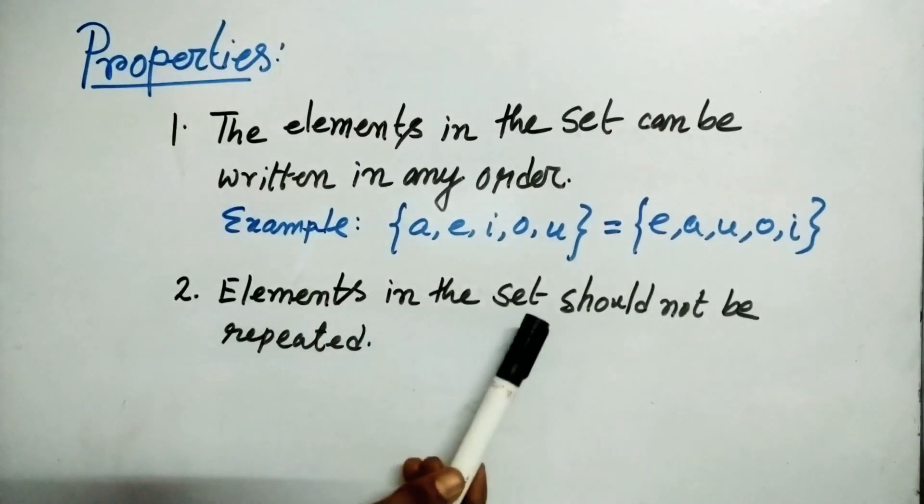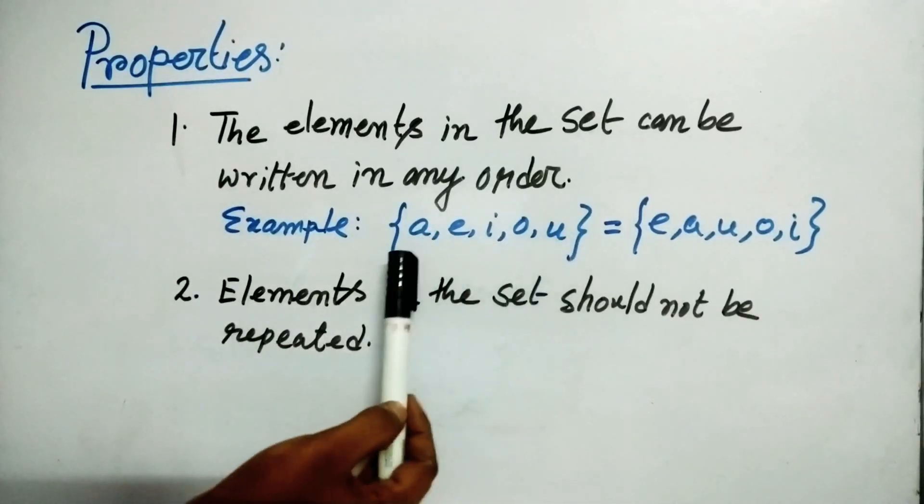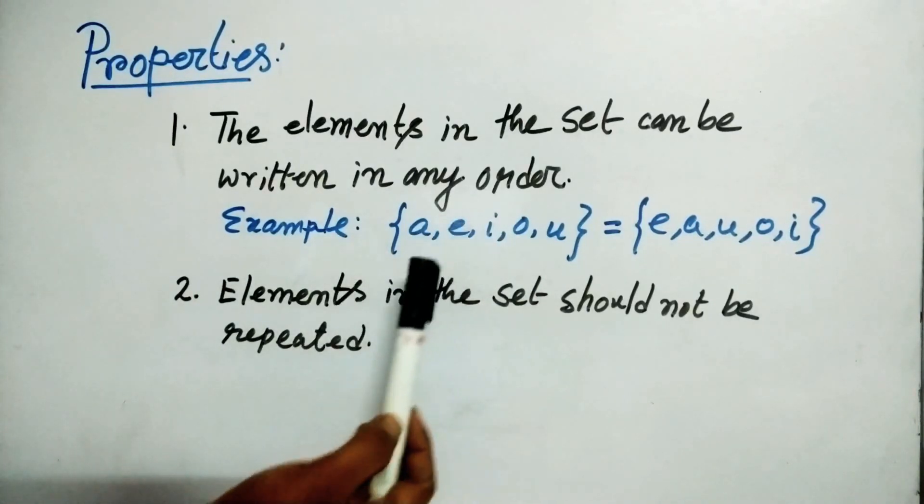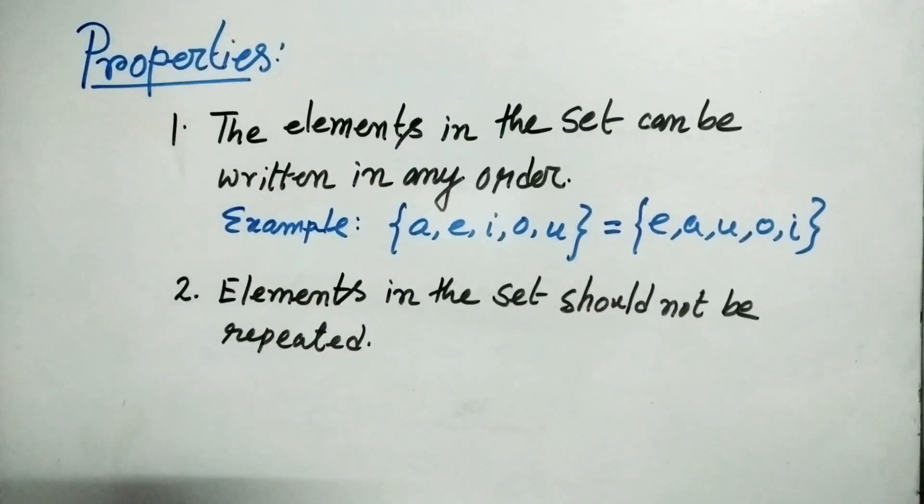Next is elements in the set should not be repeated. For an example if I take this set A E I O U. So this A cannot be written twice in this set or this element E cannot be written twice in this set.